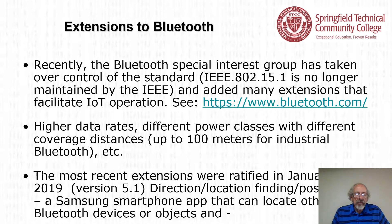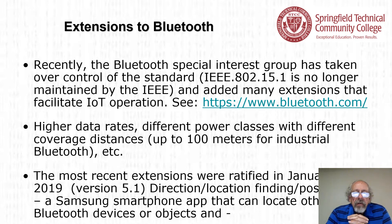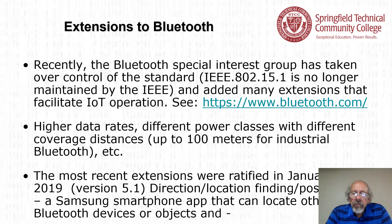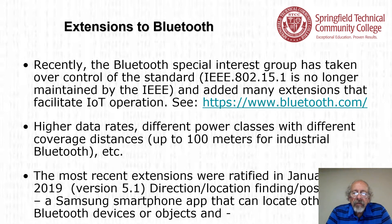That covers quite a bit going on with 802.15. Going back to Bluetooth extensions: the Bluetooth Special Interest Group has taken over control of the standard. IEEE 802.15.1 is no longer maintained by the IEEE. Many extensions have been added that facilitate IoT operation. Higher data rates and different power classes with different coverage distances — up to 100 meters for industrial Bluetooth — are available.